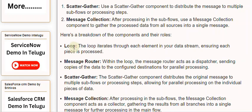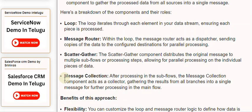Here's a breakdown of the components and their roles. The loop iterates through each element in your data stream, ensuring each piece is processed. Within the loop, the message router acts as a dispatcher, sending copies of the data to the configured destinations for parallel processing. The scatter-gather component distributes the original message to multiple subflows or processing steps, allowing for parallel processing on individual pieces of data. After processing in the subflows, the message collection component acts as a collector, gathering the results from all branches into a single message for further processing in the main flow.